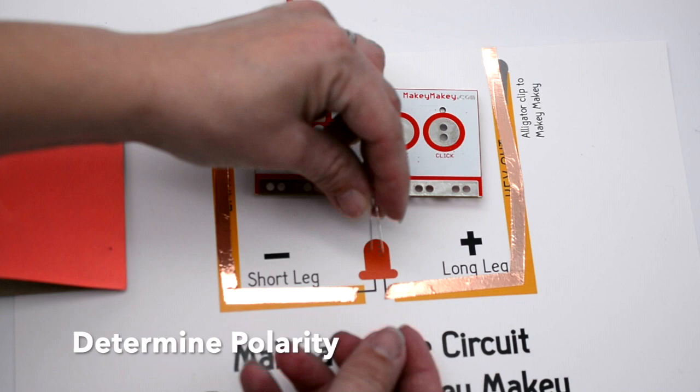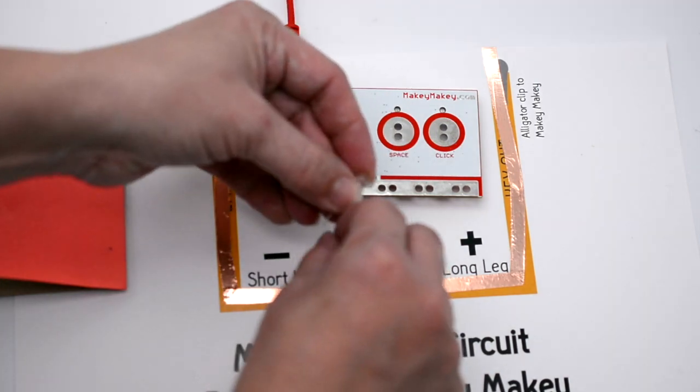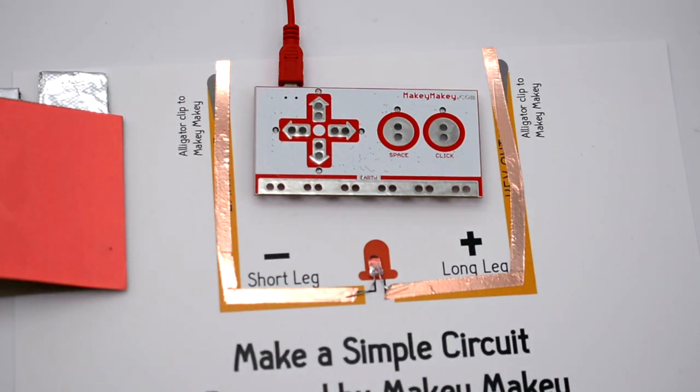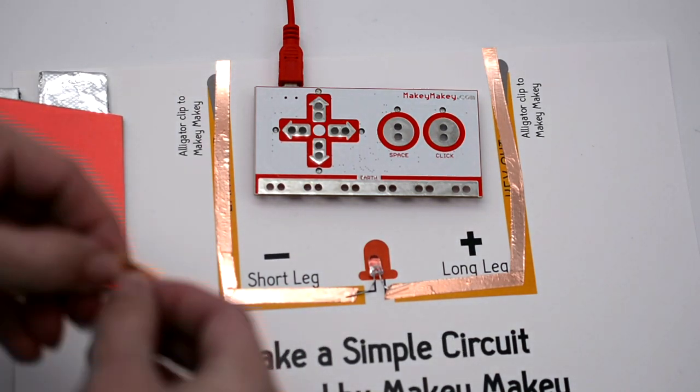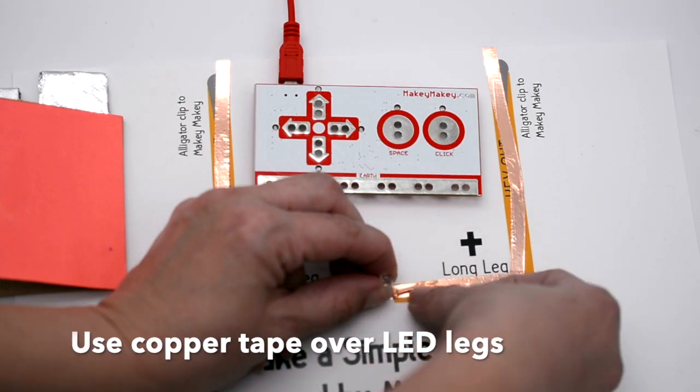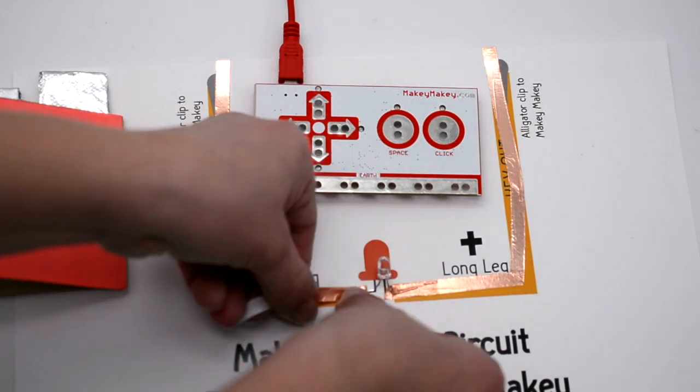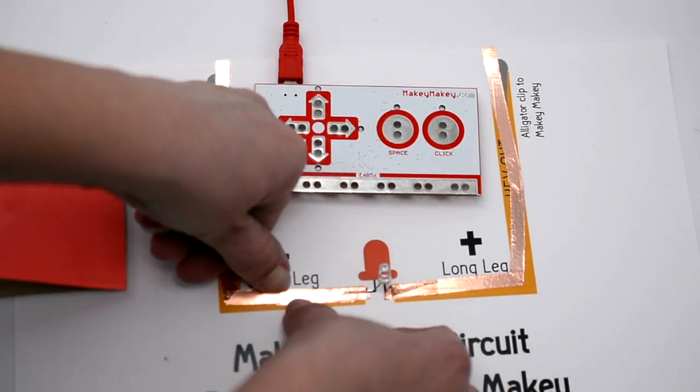Again, determine polarity by looking for the long leg of your LED. You're going to put that on the key out side. You're going to bend the legs and you're going to use copper tape to connect the LED to the tape trace. So this positive side, we also call it a tape trace. And then we'll also connect our negative side.